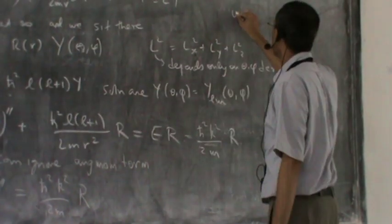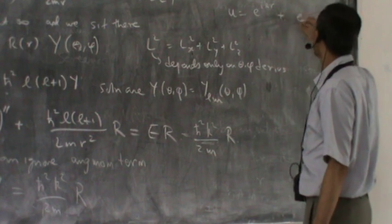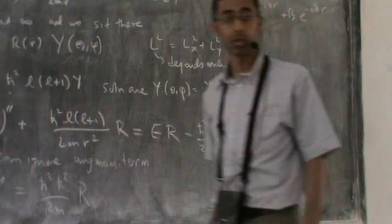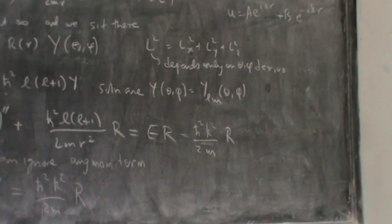And therefore, u is equal to e to the power of i k r plus e to the minus i k r, A and B. This is the solution. For large R, this is the solution.